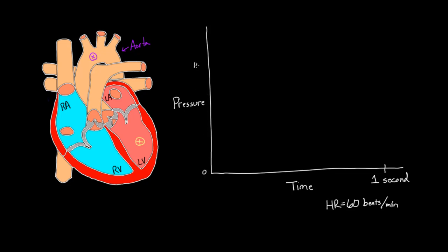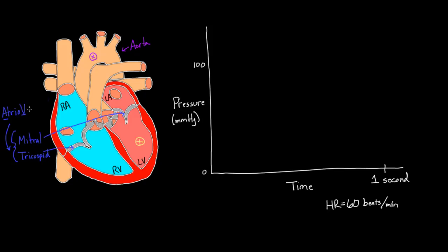The pressure axis goes from 0 to about 100, and the units are millimeters of mercury. Before I start, let me jump into some naming so we don't have to stop later. These are the valves: this is the mitral valve, and below it the tricuspid valve. Put together, we call these the atrioventricular valves — the AV valves. I'll capitalize A and V because sometimes you'll see the term 'AV valves.' Atrioventricular valves are also known as AV valves.